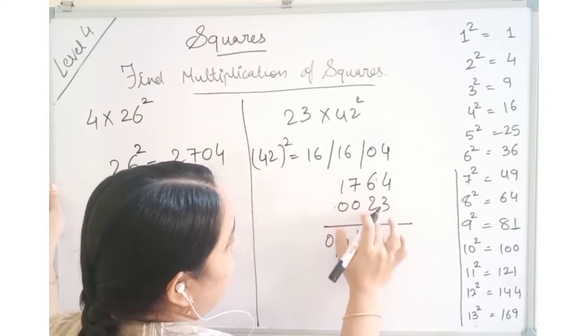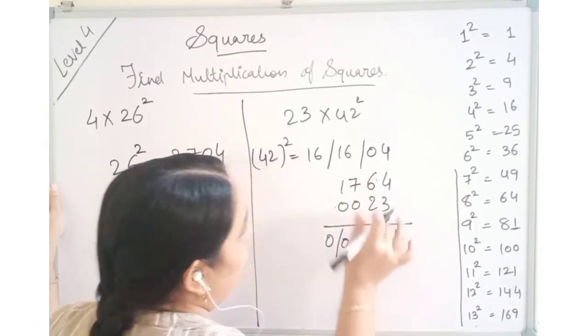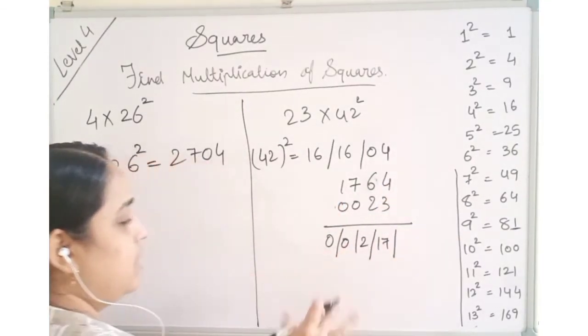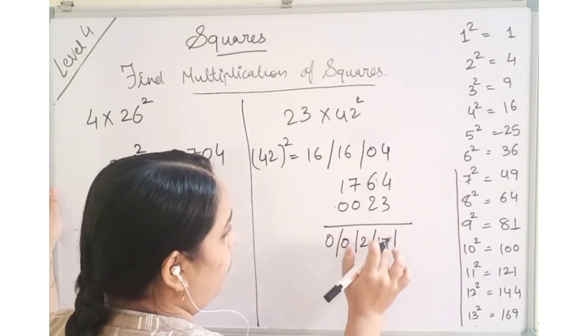Apart from that 7 twos are 14. So 14 and 3 will give us 17. Now this is 4 into 4 digit. That means balancing should be 7. Ekayunena will be applied here. 1, 2, 3, 4.